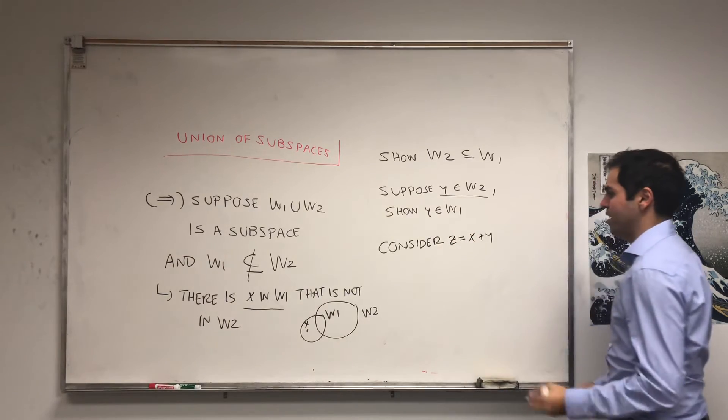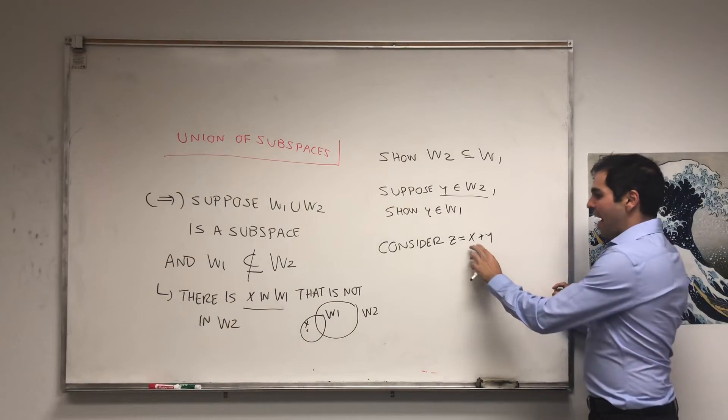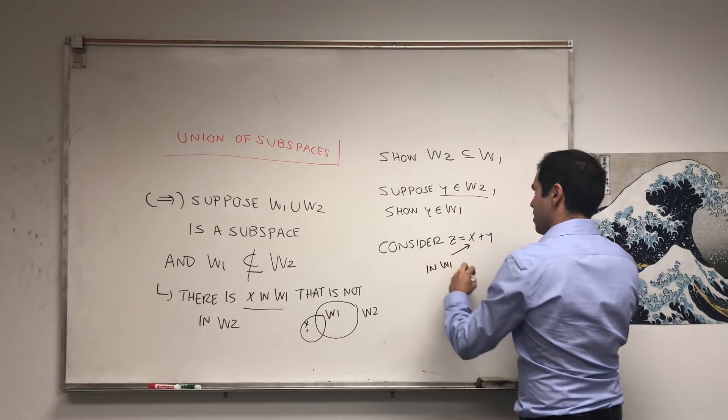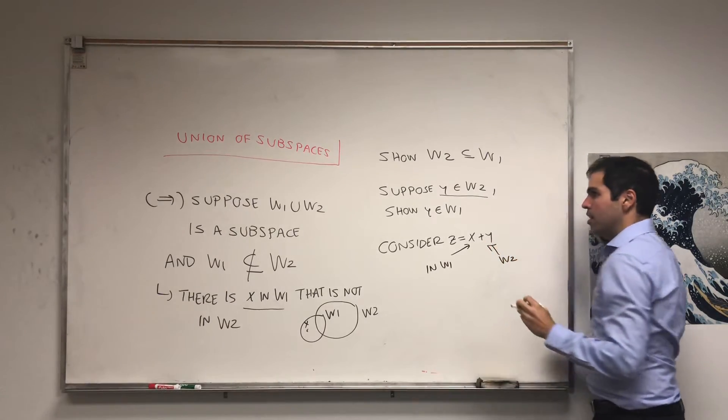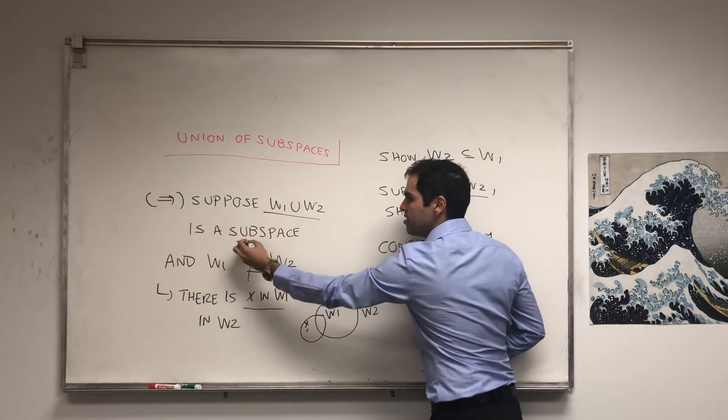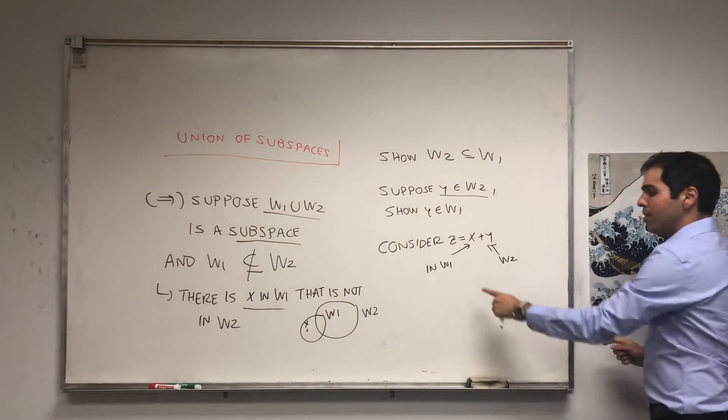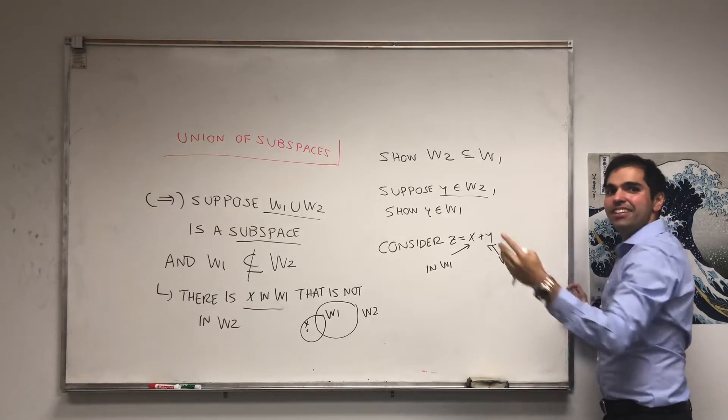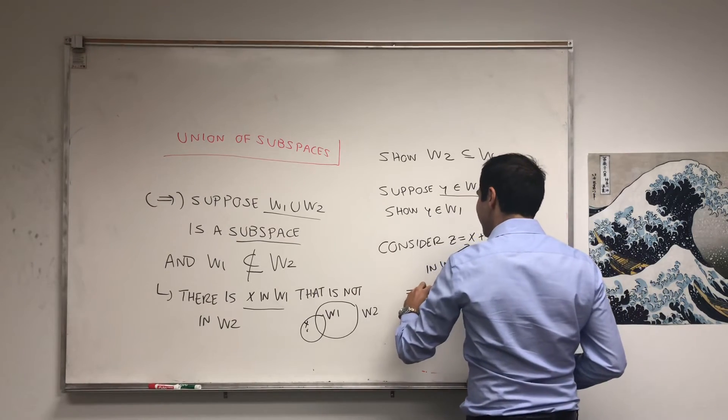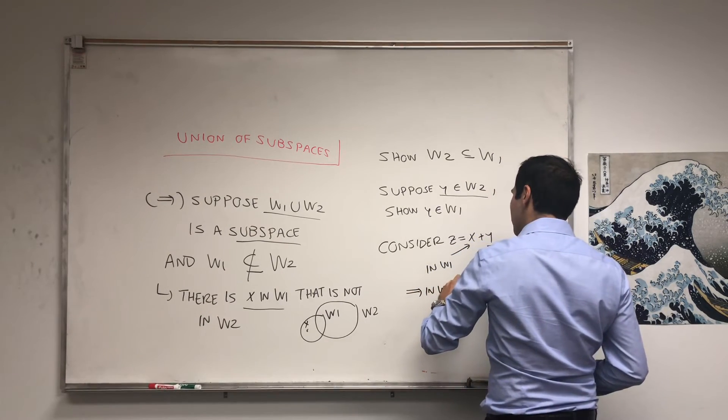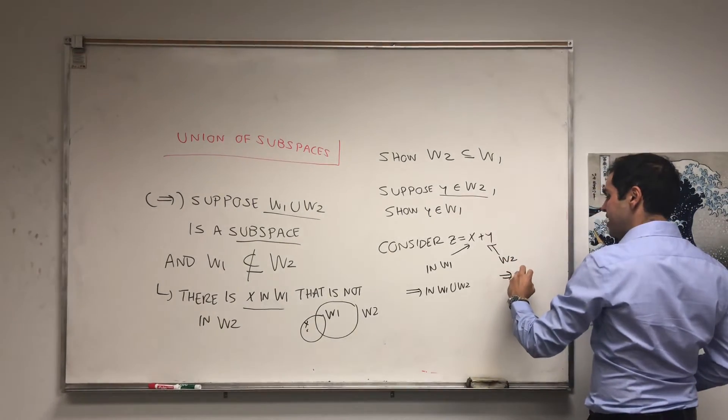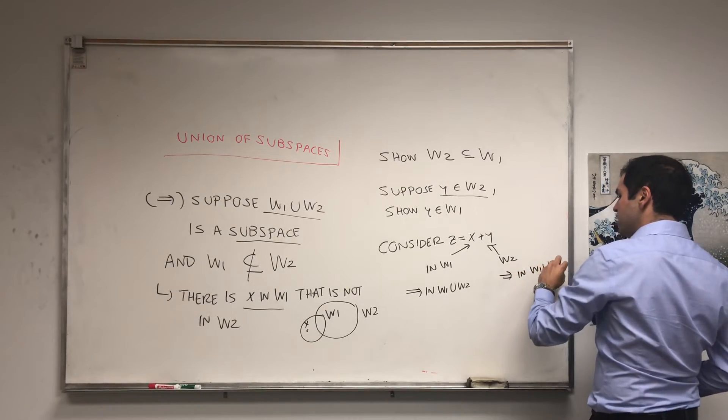This is z, which is x plus y. Now, x, we know it's in W1. And y, it's in W2. What's the only other thing we haven't used yet? We have not used that this is a subspace. But look, if x is in W1, it's in either one of them. It's either in W1 or in W2. So, this is in W1 union W2. This thing, y, is in W2. So, it's in W1 union W2.